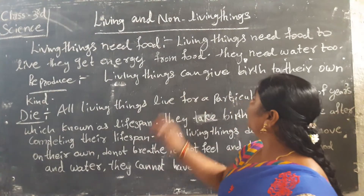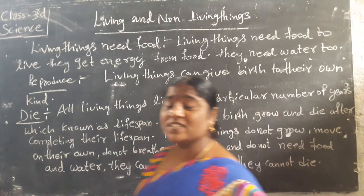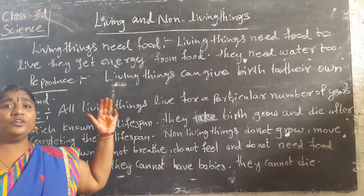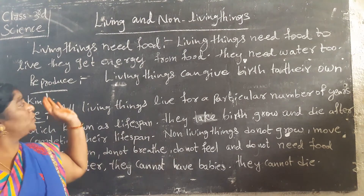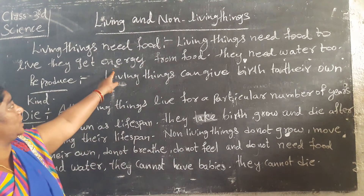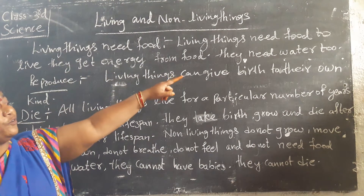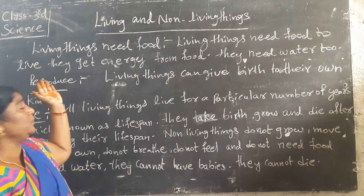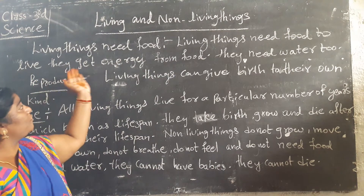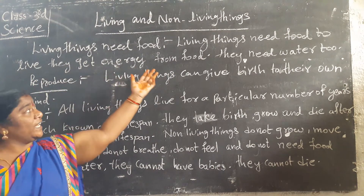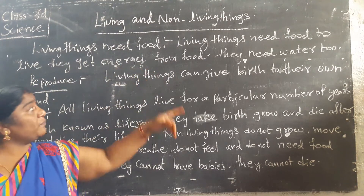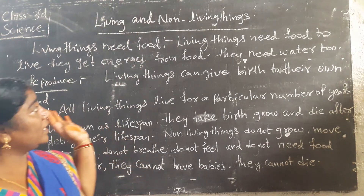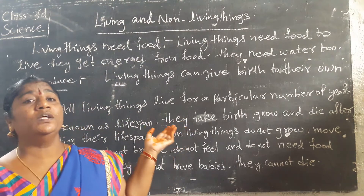Living things need food to grow. Why? Because the food gives them energy. Living things need food to grow — they live and grow. The food gives energy from that food, and food gives living things the energy they need to grow.